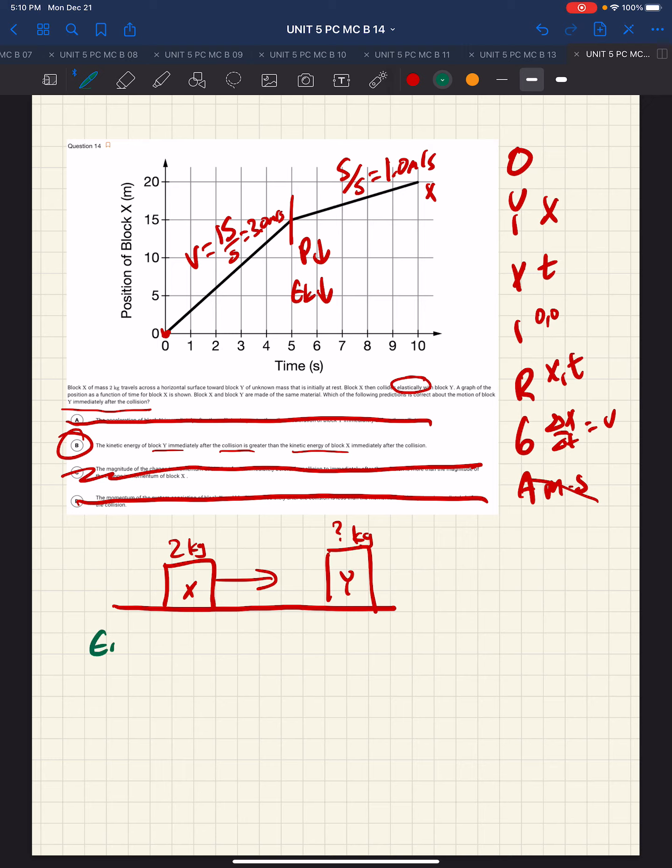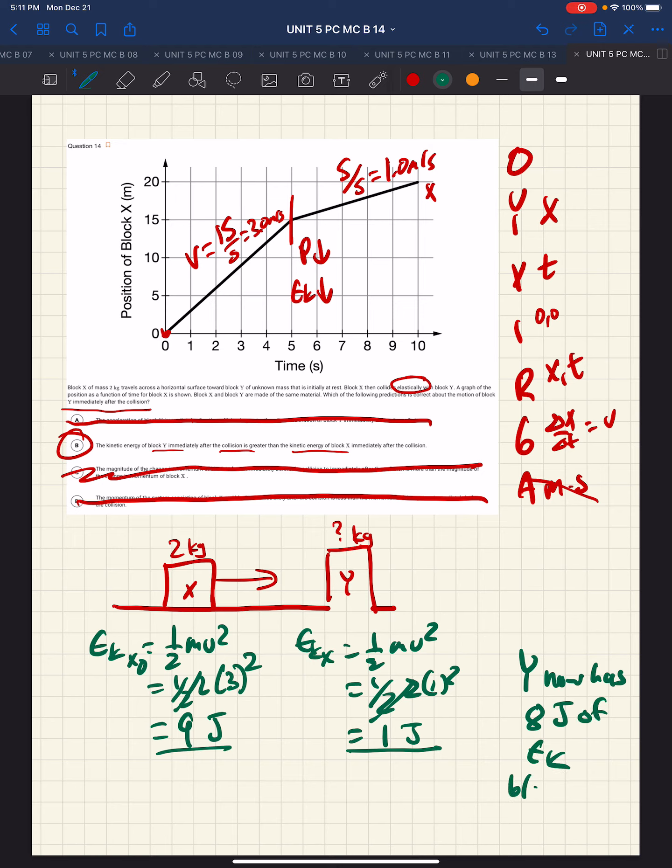So, let's calculate the kinetic energy. The kinetic energy of X is one-half mv squared, so we have one-half of two, and the velocity was three, three squared. So, that gives us a kinetic energy of nine joules. And the kinetic energy of Y, one-half mv squared. Oh, let's find the kinetic energy afterward. Excuse me. Find the kinetic energy of X afterward. So, one-half of two times one squared is going to be one joule. So, what that means is that X had nine joules of energy. It went down to one joule of energy, which means that Y now has eight joules of kinetic energy because EK was conserved.